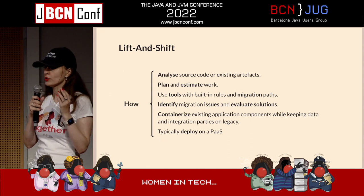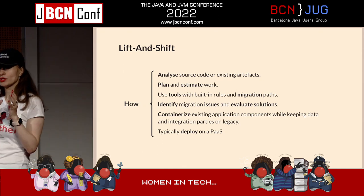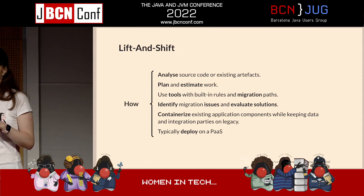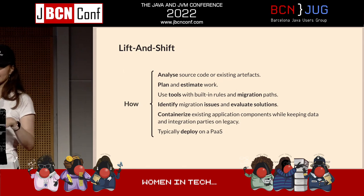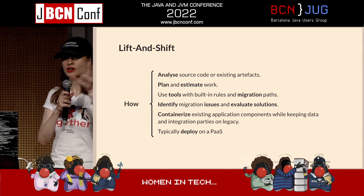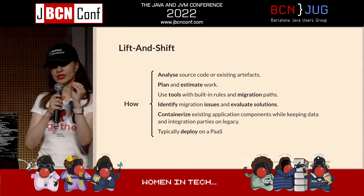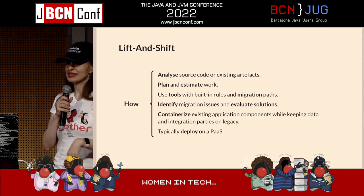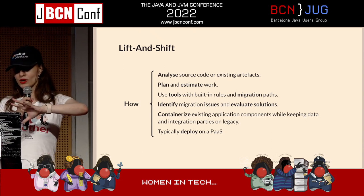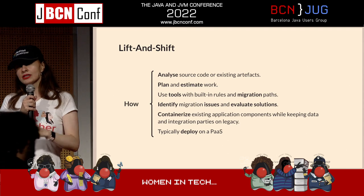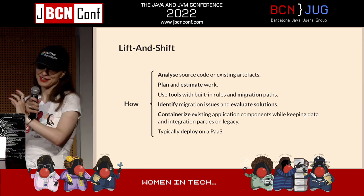Regarding lift and shift, how do you do it properly? First, analyze the source code or existing artifacts of what you've built. Second, plan and estimate the work — at least a high-level plan. There are a lot of tools that can help you with built-in rules and migration paths. They're not going to be perfect, but you can identify migration issues based on your experience and evaluate the solutions. Then think about containerizing your existing application components while keeping data and integration points on the legacy side. Do not move everything at once — try to do it gradually. Typically lift and shift is going to involve a platform as a service.